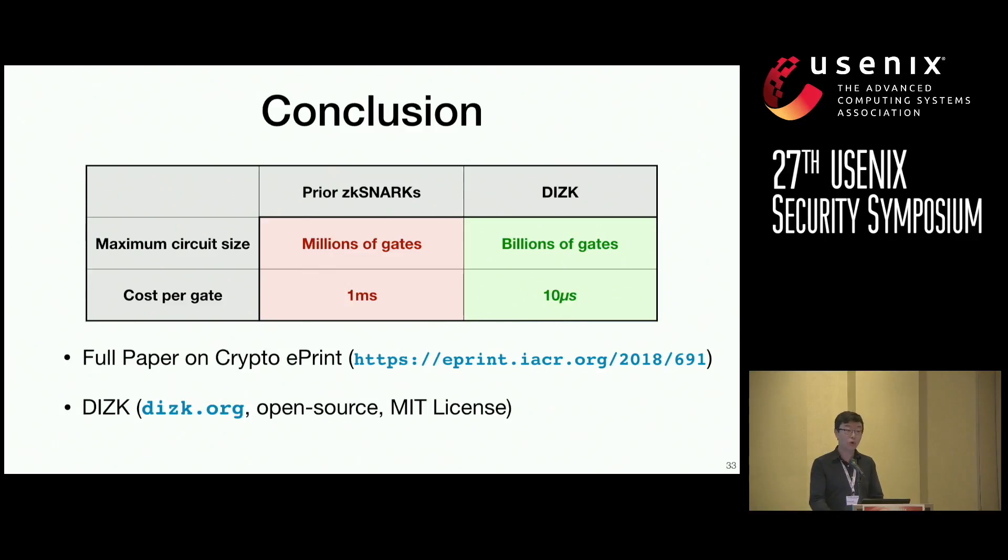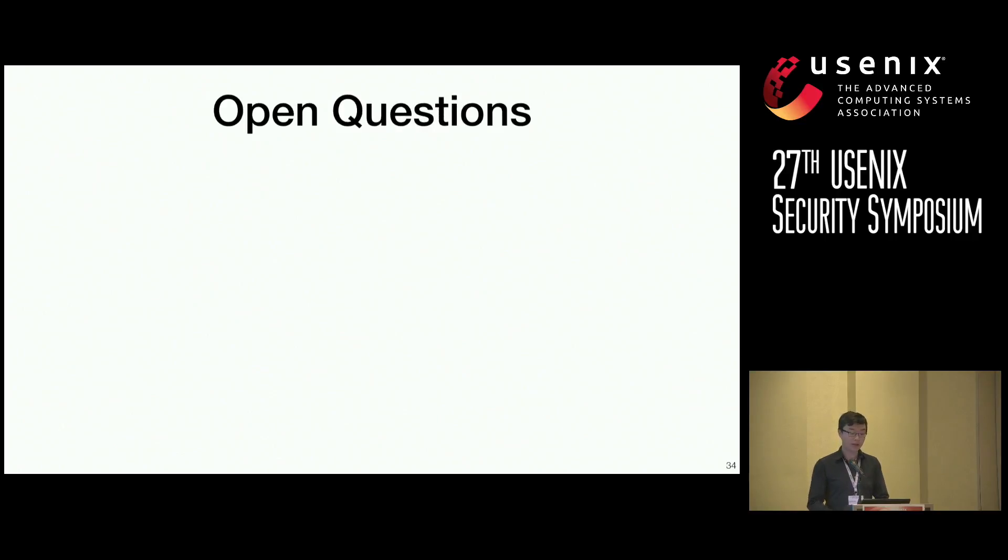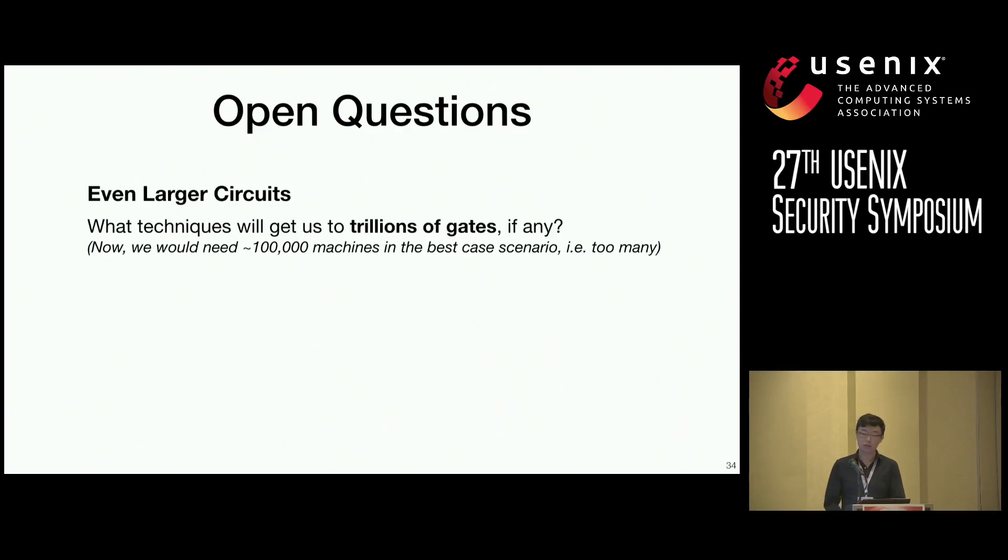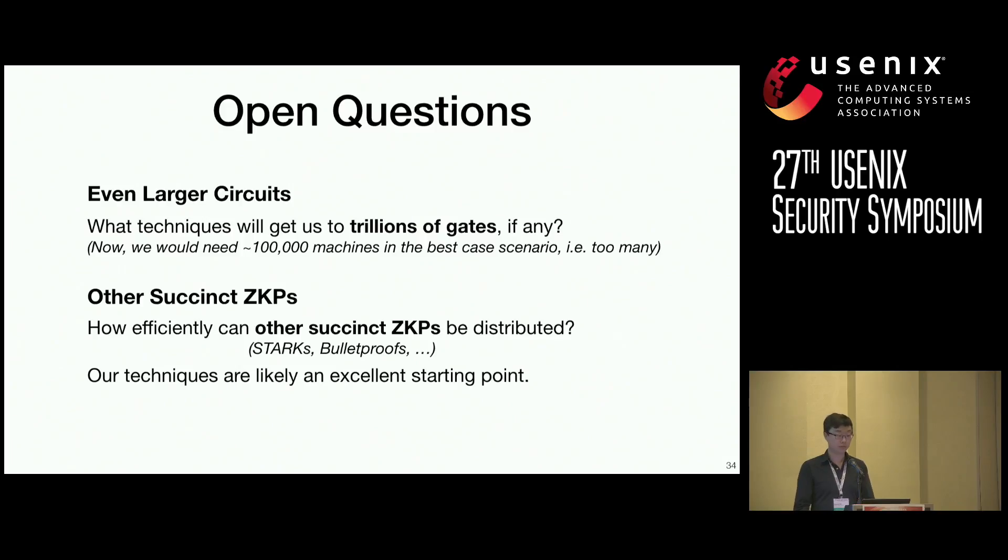Lastly, I would like to leave you with two open questions. And the first is, with regards to even larger circuits, what techniques will get us to trillions of gates, if any. With our current techniques, we would need approximately 100,000 machines in the best case scenario. And this, in practice, is just too many. The second question is, with regards to other succinct zero-knowledge proofs. So, how efficiently can other succinct zero-knowledge proofs be distributed? Our techniques seem like an excellent starting point for things like Starks and Bulletproofs, etc. And with that, I'd like to conclude, and thank you for your attention.